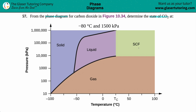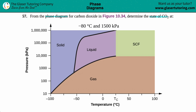All we're doing is plotting a point. Our x-axis is temperature in degrees Celsius, and our y-axis is pressure in kilopascals. We want to find negative 80 degrees Celsius as our x-coordinate and 1500 kilopascals as our y-coordinate, so our point is (-80, 1500).